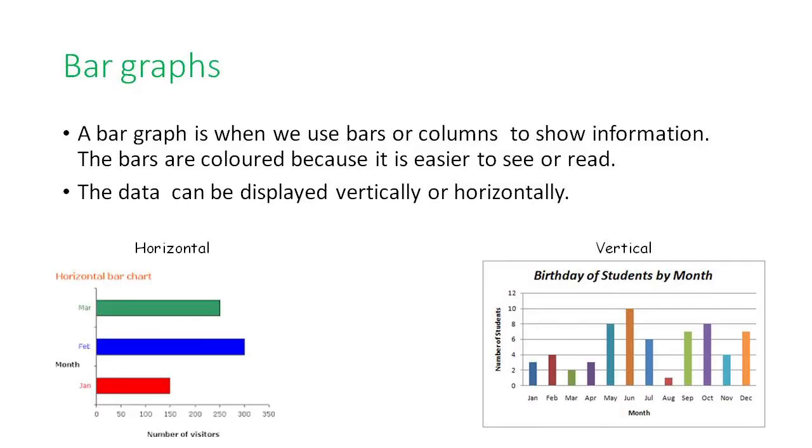The next type of graph we'll be looking at is a bar graph. A bar graph is when we use bars or columns to show information. The bars are colored because it is easier to see or read. The data can be displayed vertically, in other words from top to bottom, or horizontally from left to right. You'll see here we have a horizontal example where the bar graph is going across the page, and then we also have a vertical example where the bars are going from bottom to top.